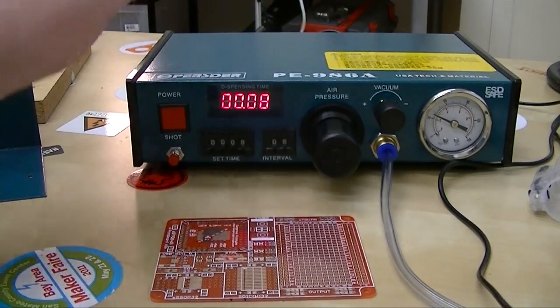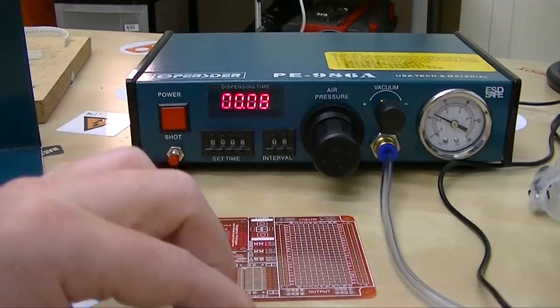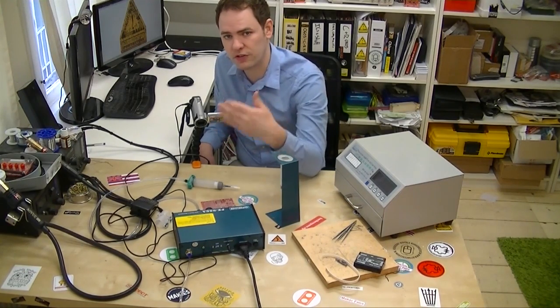Power it up. This gauge over here tells us how much pressure it's applying to the solder paste. I find about 50 psi or so is working well without using so much air that the compressor is running all the time.